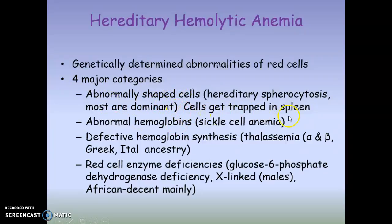With abnormally shaped cells, the cells get trapped in the spleen or other areas of the body and cannot transport oxygen to the tissues. With abnormal hemoglobin, the major example is sickle cell anemia, which you will need to know about and we'll discuss on the next couple of slides.